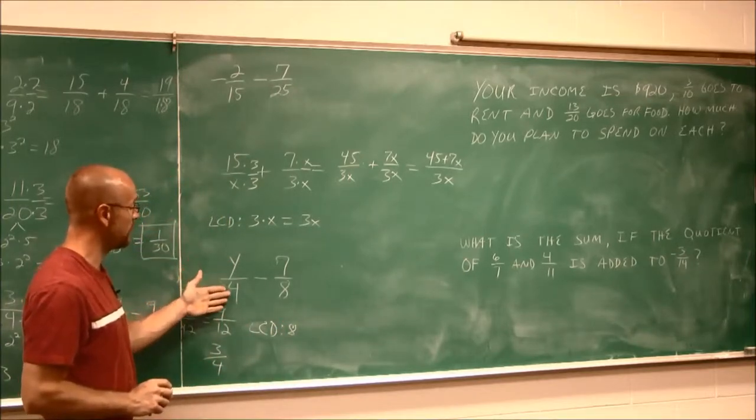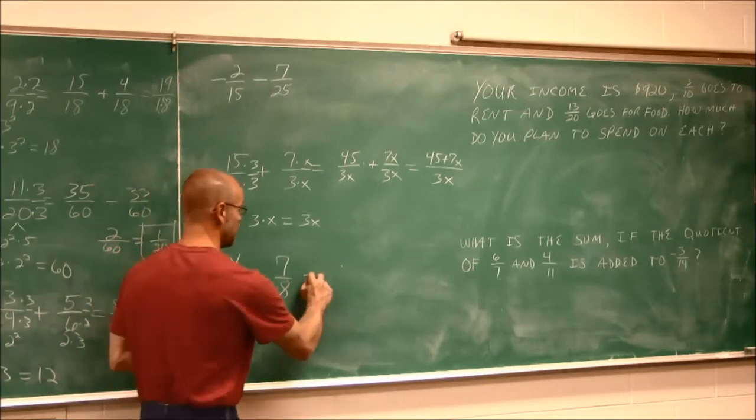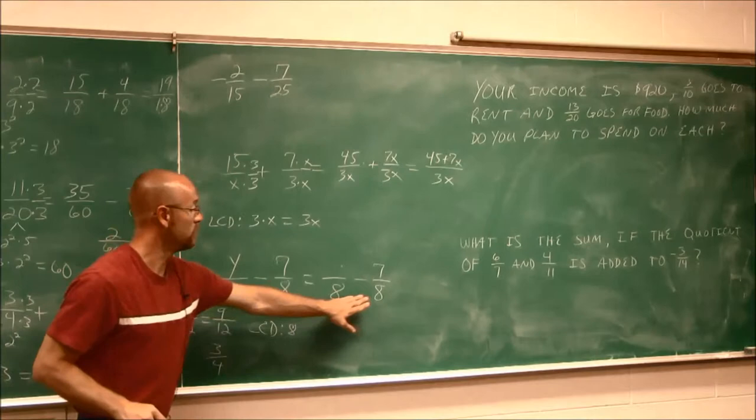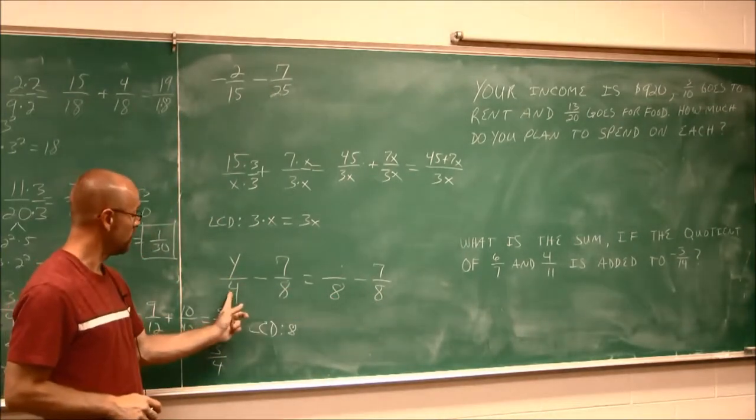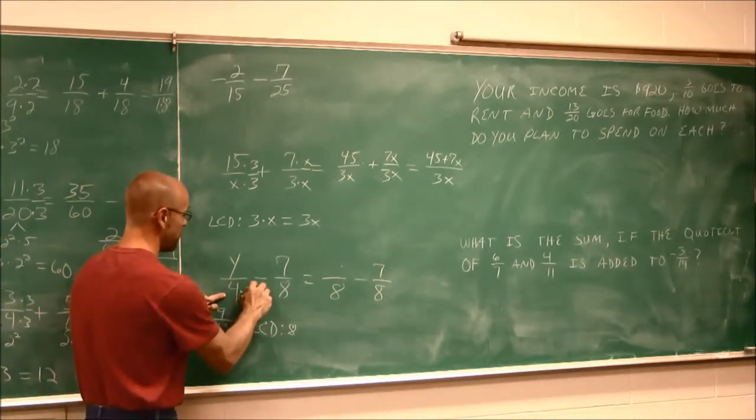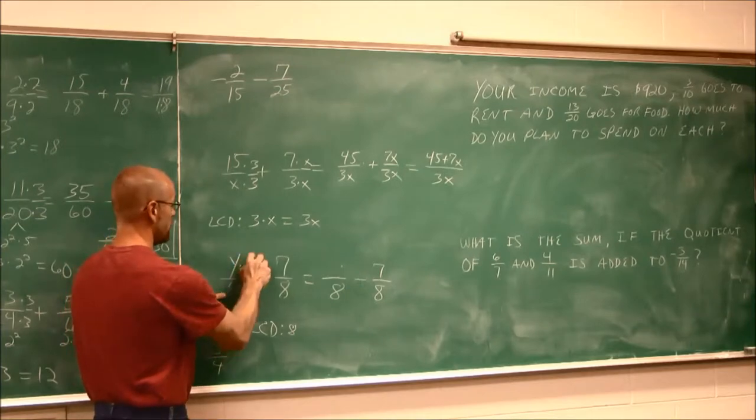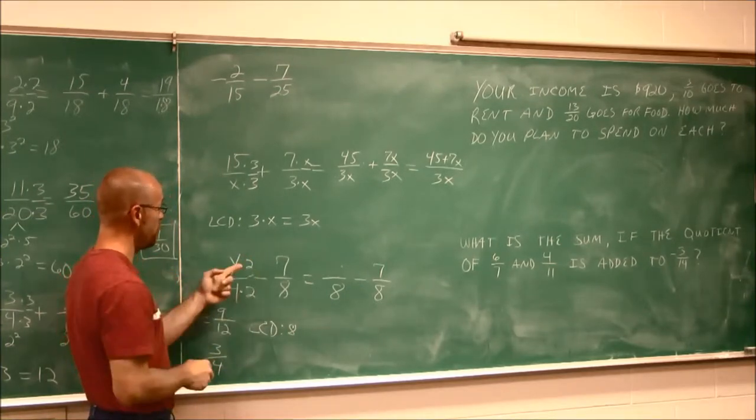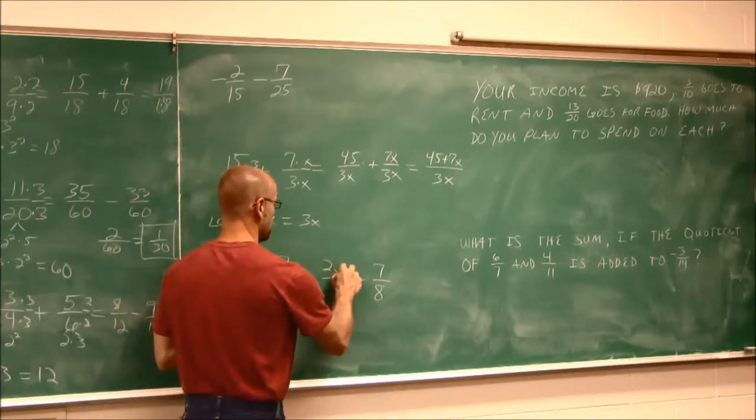So what do I have to do to this 4 to make it an 8? If we look here, we have that same denominator. What do I have to do to this? I have to give it a factor of 2 because 2 times 4 is 8. What I do to the bottom, I do to the top. 2 times y is 2y.